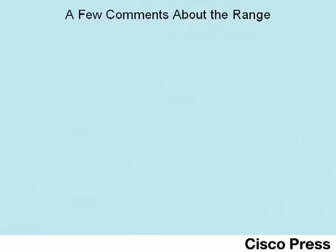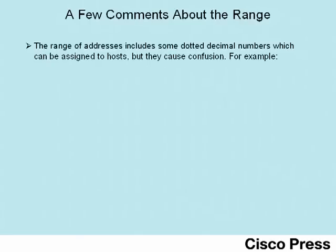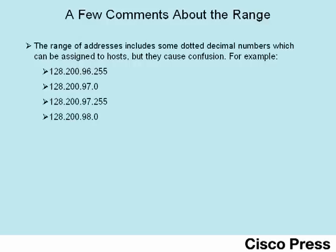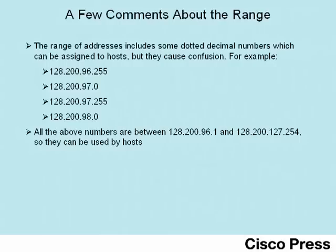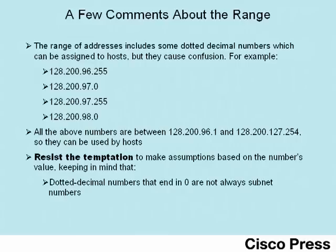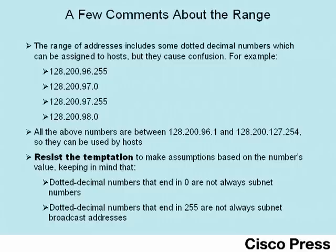This concludes the example of how to use process RP-6C to find a subnet broadcast address and range of valid addresses. Before finishing, note a couple of IP addresses in that range that may cause problems on the test. Consider addresses like 128.200.96.255, 128.200.97.0, 97.255, and 98.0. Many people might assume the ones ending in zero are subnet numbers and those ending in 255 are broadcast addresses. In fact, all these are valid, assignable IP addresses. Try to resist making assumptions about dotted decimal numbers — not all numbers ending in zero are subnet numbers, and not all ending in 255 are subnet broadcast addresses.